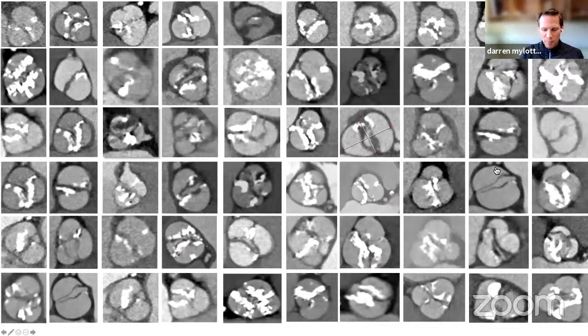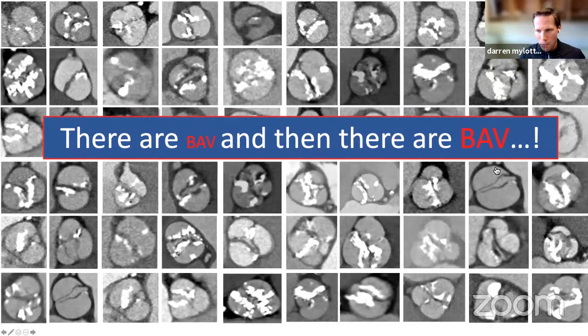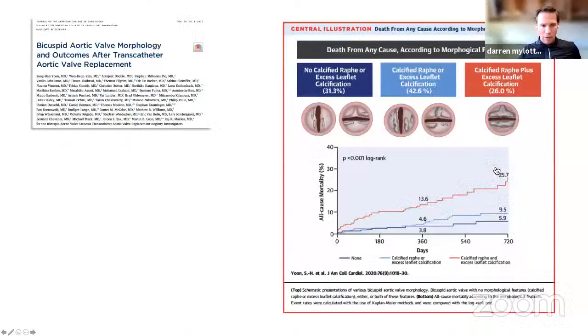From cases I've been involved in, all are bicuspid valves, but no two are alike. You have different lengths of raphae, different calcifications of raphae, commissural fusion, thickened leaflets, three sinuses, two sinuses. It's important to understand there are bicuspid valves, and there are really severe bicuspid aortic valves. Great credit has to go to Sung-Han Yoon and Raj Makkar, who have done a huge amount of work in this space and published for me the most important paper in bicuspid aortic valve.